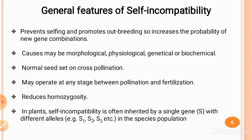The self-incompatibility reaction can operate at any stage between pollination and fertilization — it is not restricted to a specific stage. In plants, self-incompatibility is often inherited by a single gene, capital S, which has multiple alleles such as S1, S2, S3, and so on in a species population. The S locus with its multiple alleles is responsible for causing the self-incompatibility reaction, and this is inherited from one species to another.